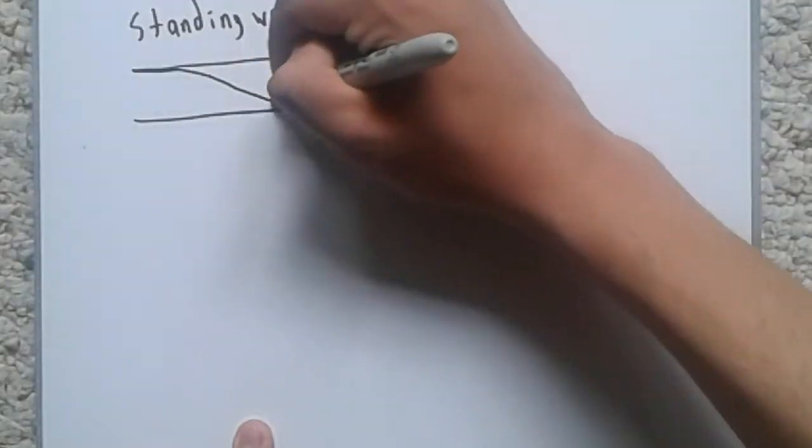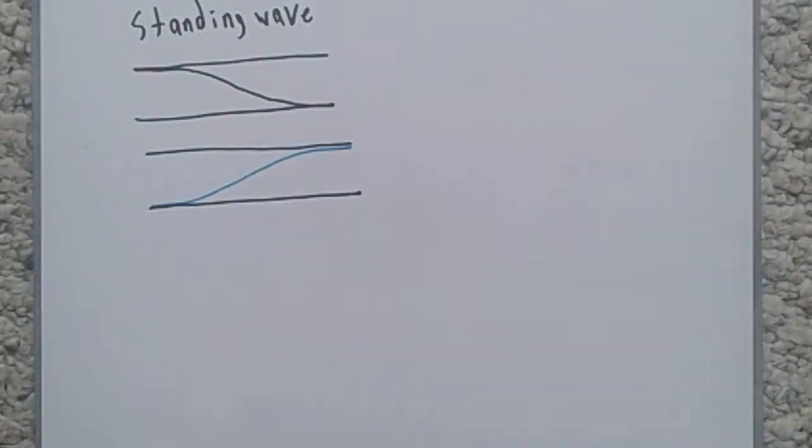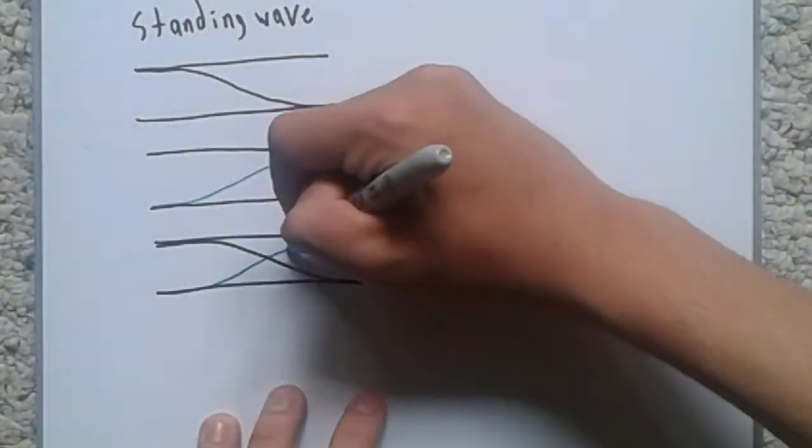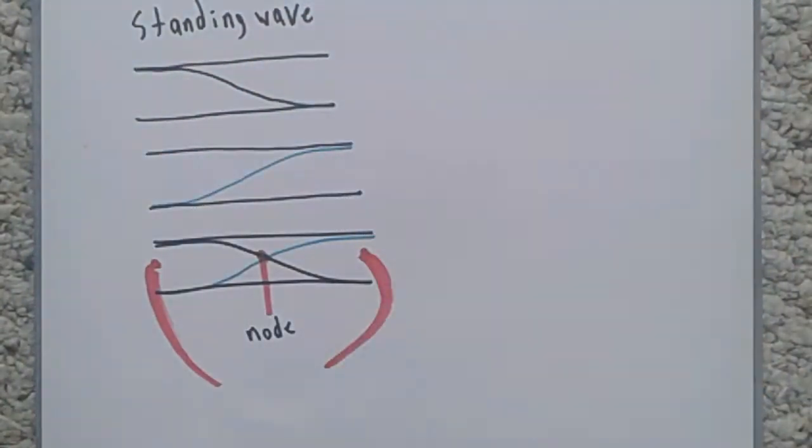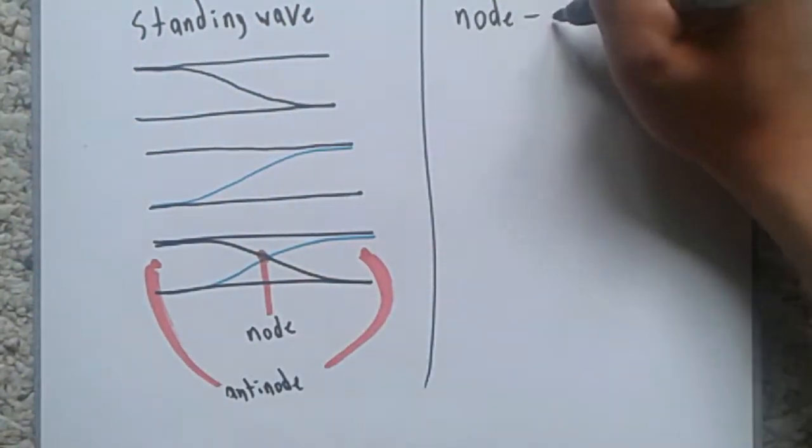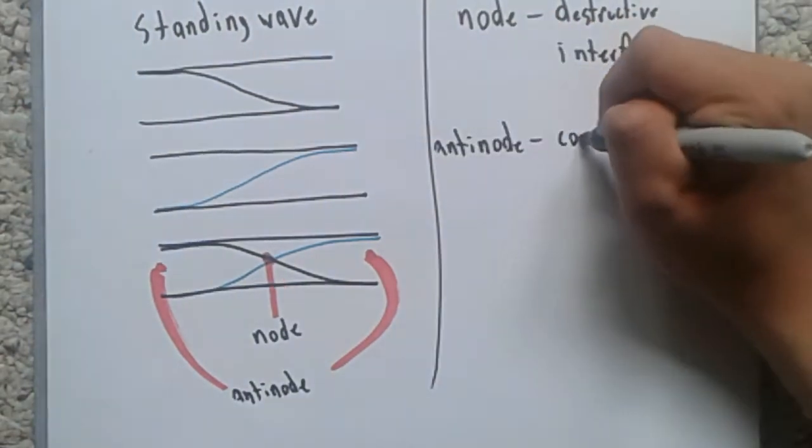String, wind, and brass instruments use standing waves. Standing waves occur when waves reach the end of the tube and are reflected back, interfering with itself constructively and destructively.